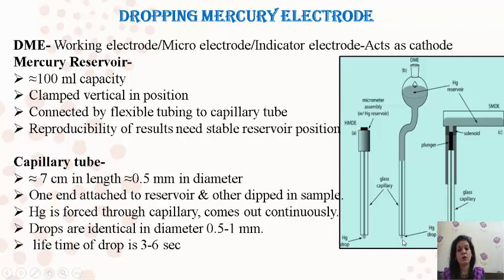The lifetime of each drop is 3 to 6 seconds. The reproducibility of results depends upon the constant vertical position of the reservoir and the width, diameter, and size of the capillary tube. The dropping mercury electrode is very active. The surface area is continuously renewed and reproducible. It can be used over a range of +0.4 volt to -0.2 volt. Mercury forms amalgam with many metals and can carry out reduction of many metal ions.